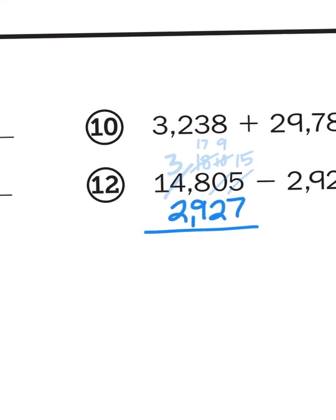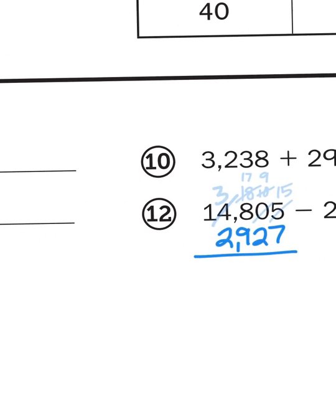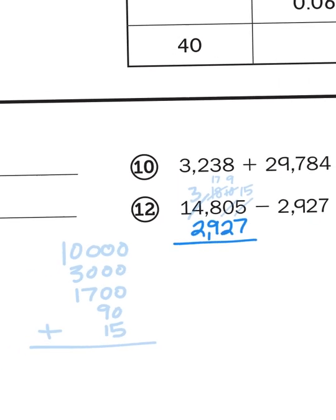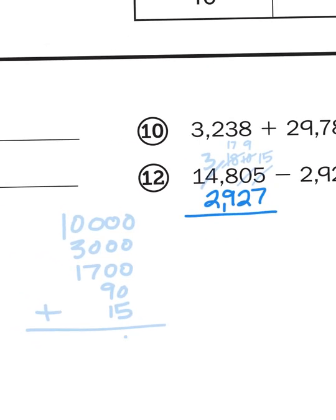Now, I deconstructed that number 14,805 to become ten thousand and three thousand and seventeen hundred, otherwise known as 1,700, nine tens, ninety, and fifteen ones. If I add them all back together, I should get the number I started with. Which I do. 14,805.